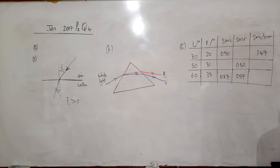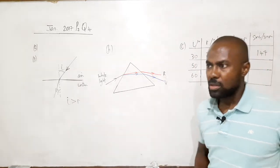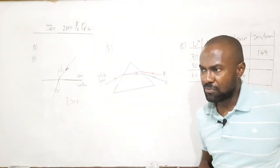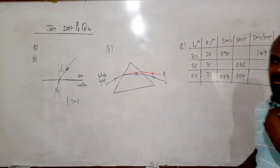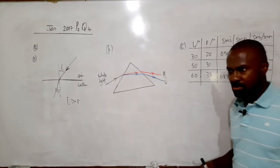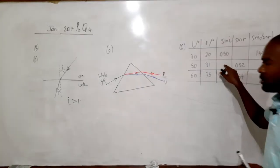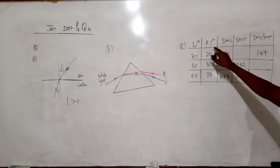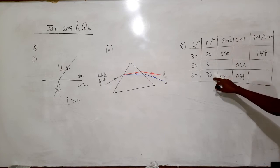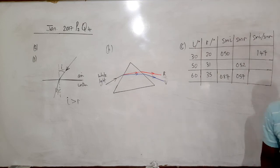Part c: An experiment was conducted to verify Snell's law of refraction by measuring the angle of incidence i and the angle of refraction r for a light ray entering a glass block. The data was recorded in Table 2, which shows angles of incidence of 30°, 50°, and 60° with corresponding angles of refraction of 20°, 31°, and 35°. Some values are missing and we need to fill them in.